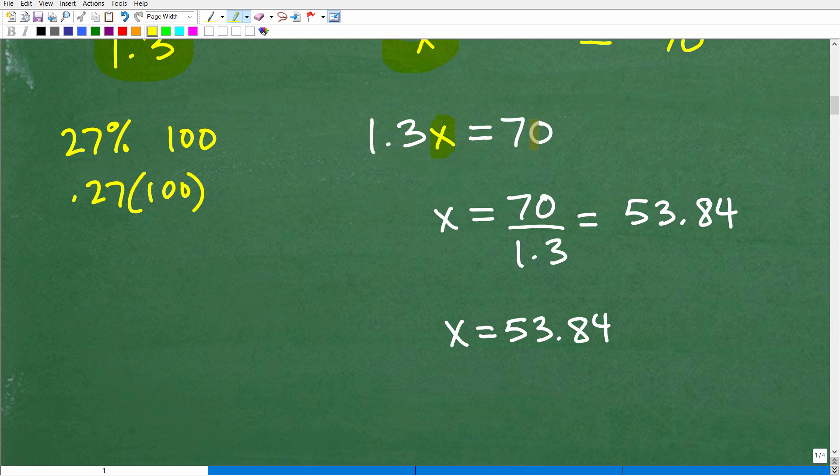Well, you need to divide both sides of the equation by 1.3. So 70 divided by 1.3, get your calculator out, you're going to get 53.84. Now, I am rounding off. There are more digits here. So this is an approximation. So technically, this is not a perfect answer. So I'm kind of rounding off here the two decimal points. So our number is approximately 53.84.